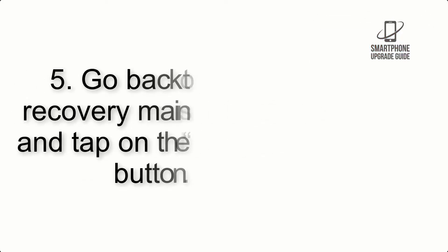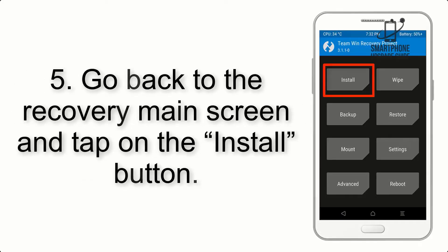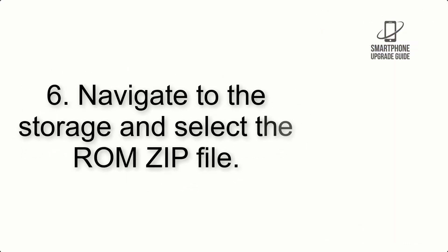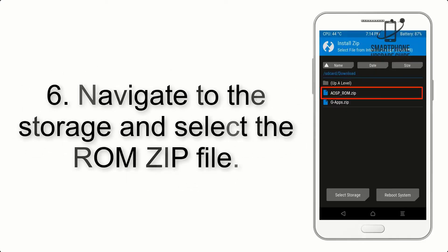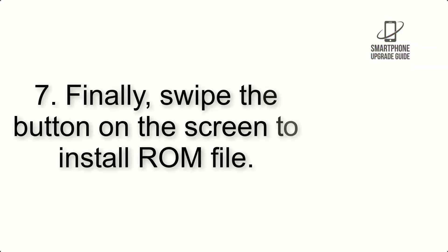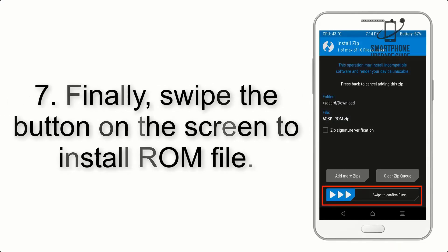Step 5: Go back to the recovery main screen and tap on the Install button. Step 6: Navigate to the storage and select the ROM zip file. Step 7: Finally, swipe the button on the screen to install the ROM file.